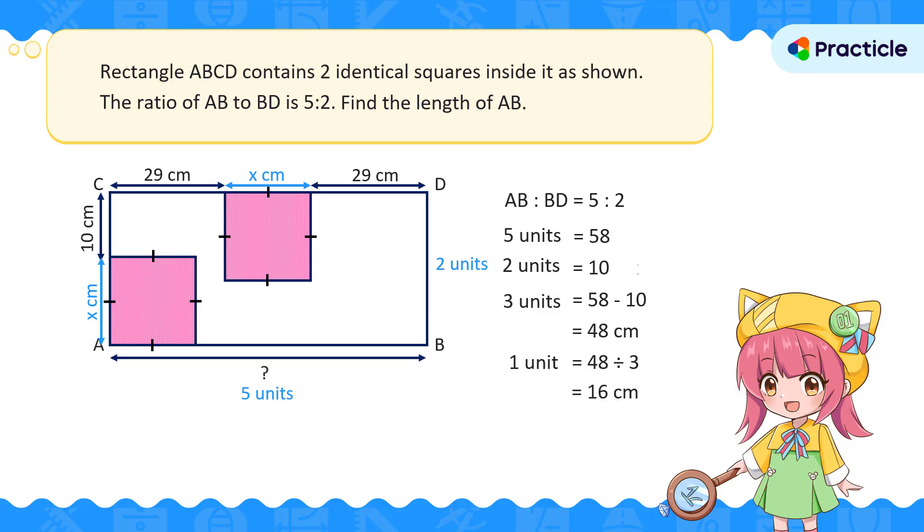Now we're one step away from our answer. Remember that AB is 5 units? Let's multiply 16 cm by 5 to see how long it is. 16 times 5 is 80. AB is 80 cm.